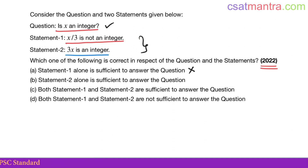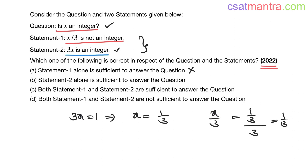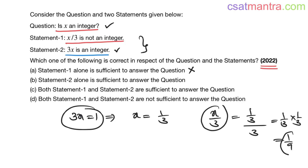Now let's combine both statements. Statement 2: 3x is an integer — take 3x=1, so x=1/3. Check Statement 1: x/3 = (1/3)/3 = 1/9, which is not an integer — Statement 1 satisfied. In this case, is x an integer? No.